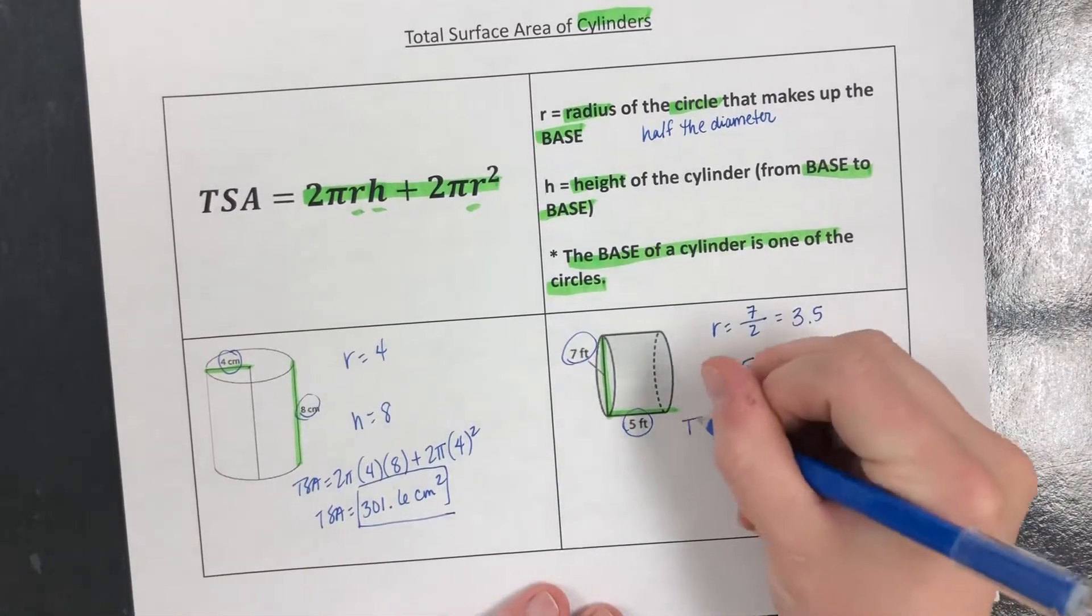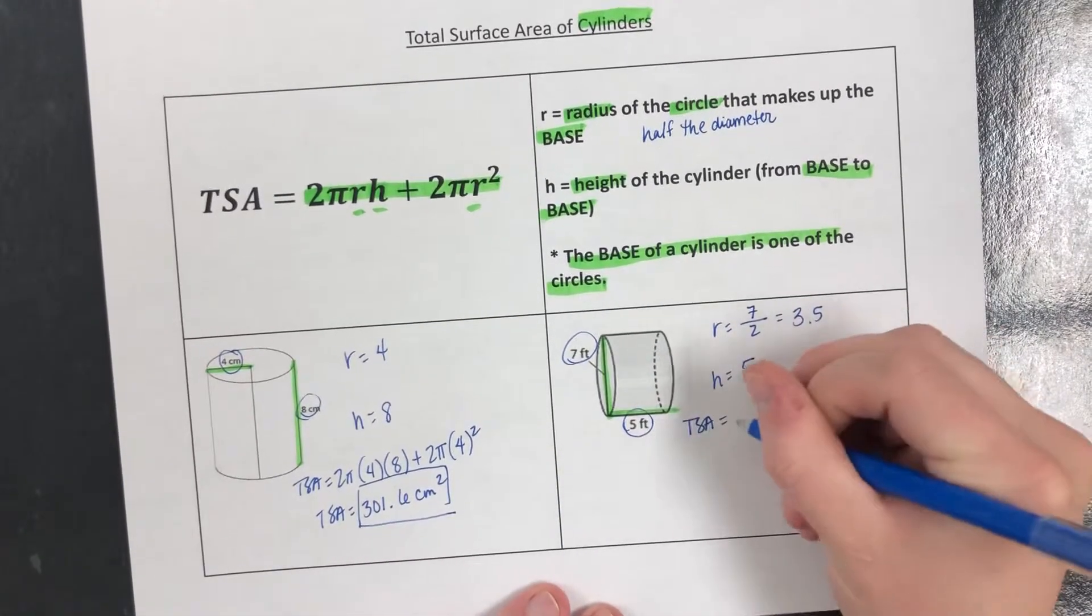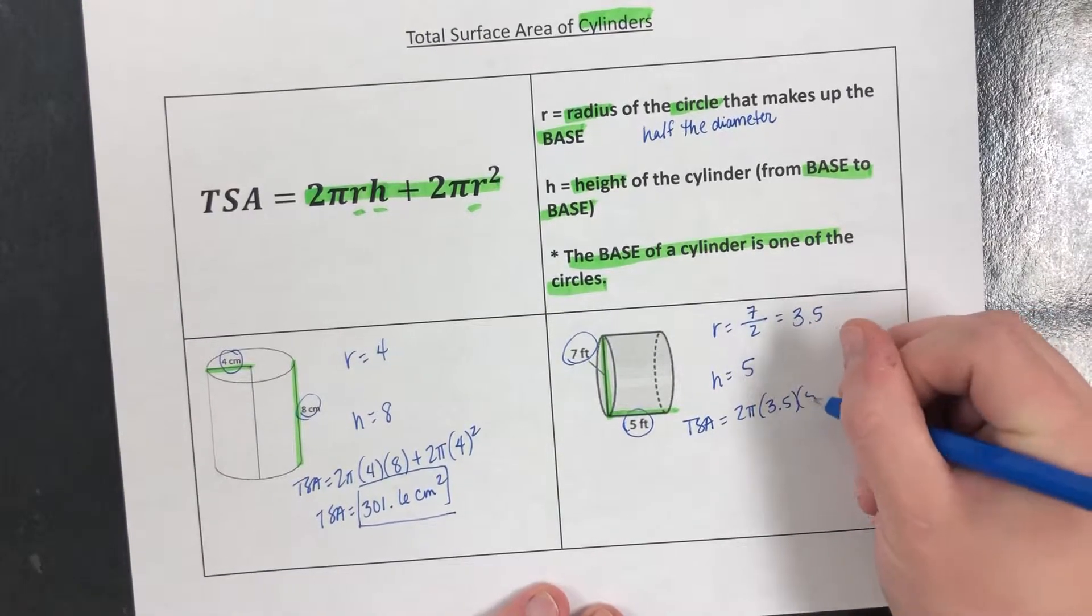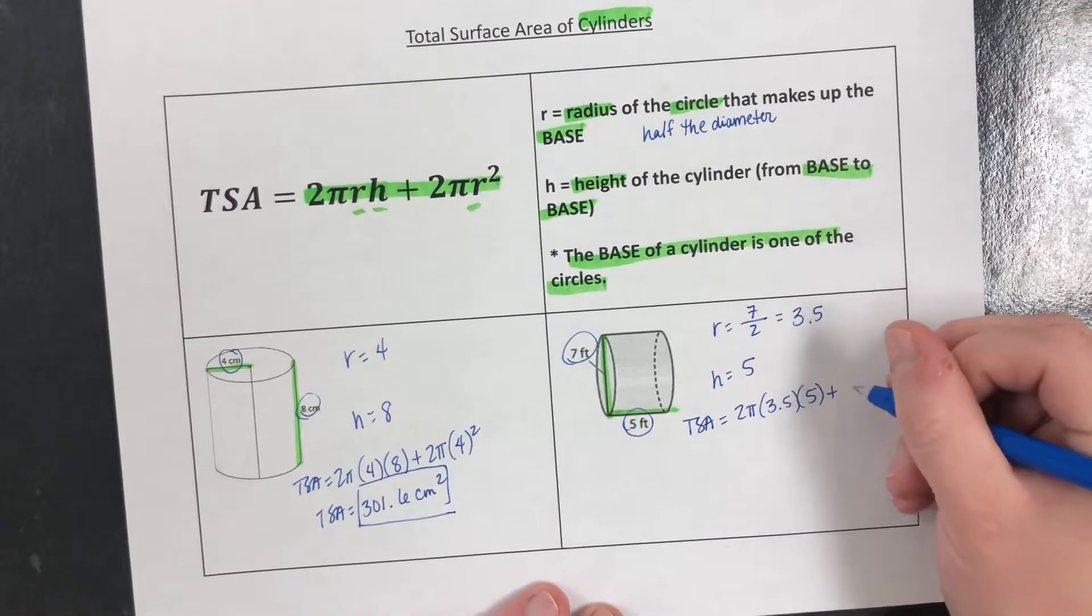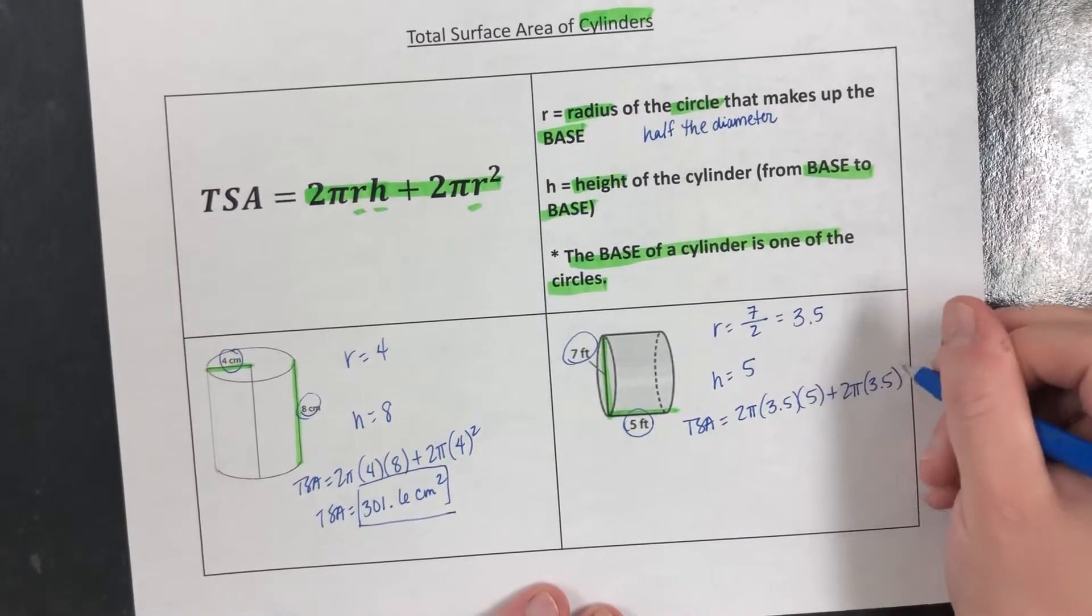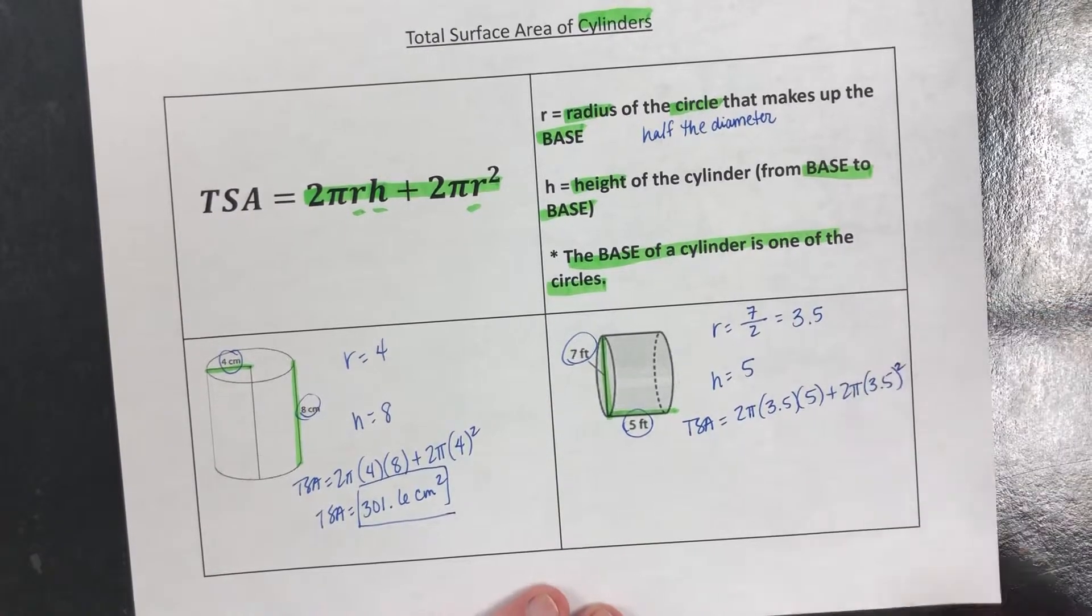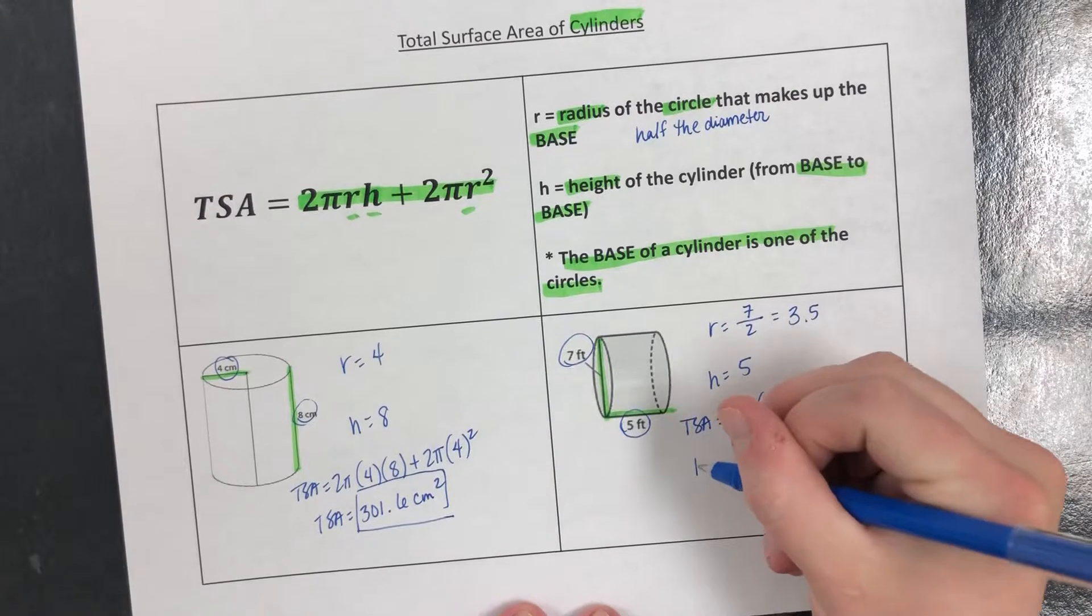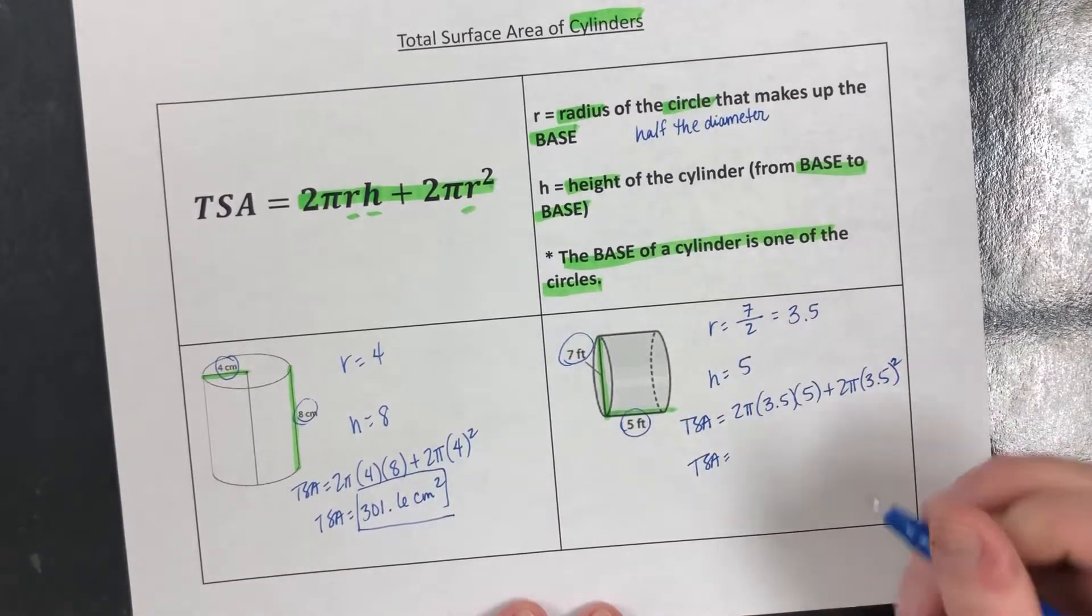Plug it in. Total surface area = 2π times the radius times the height plus 2π times the radius squared. So it's very long but again, type it into your calculator, let it do all the hard work. And you should get 186.9 feet squared.